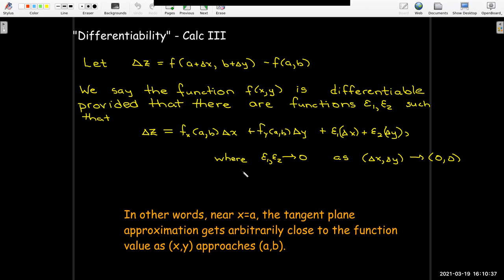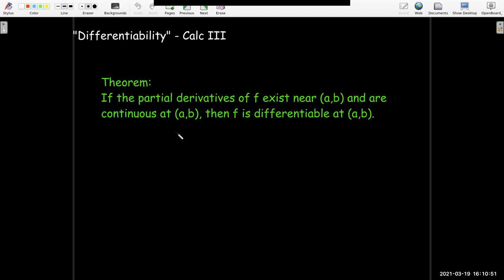This is saying that the tangent plane approximation gets arbitrarily close to the function value as (x,y) approaches (a,b). Now granted, this is a little bit complicated to state. Not a very useful test to determine if a particular function is differentiable at (a,b). But we do have this very useful theorem, which is what we would hope is true. That if both the partial derivatives exist near (a,b) and they have to be continuous too at (a,b), then f is differentiable at the point (a,b).